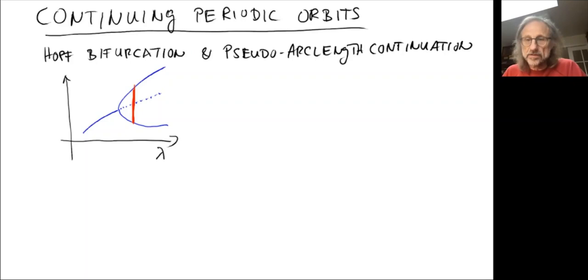And so therefore we want to use the technique we've developed for the steady bifurcations, where we use the pseudo arc-length continuation to go from one point in the parameter value to another one.